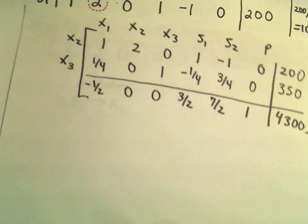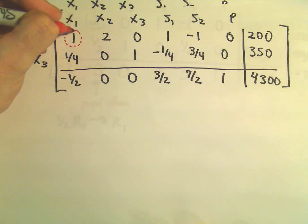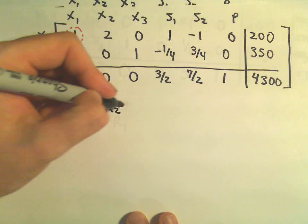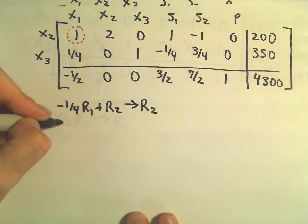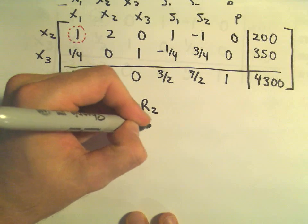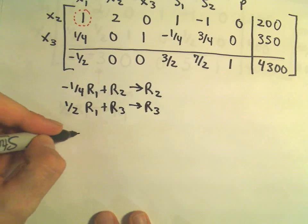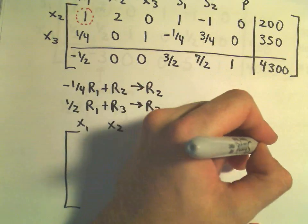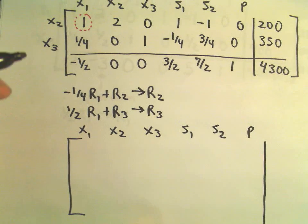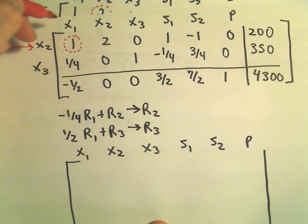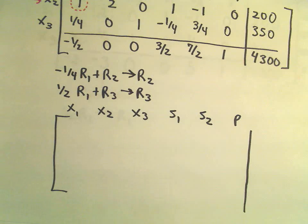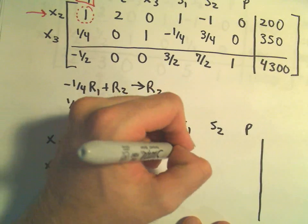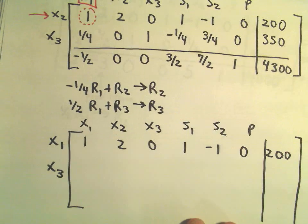Last but not least, we still have to get zeros elsewhere in that column. Our 1 is our pivot element. We're going to take negative one-fourth times row 1, add that to row 2 to get our new row 2. We'll also take positive one-half times row 1, add that to row 3 to get our new row 3. Since we're doing this row operation, we have to switch out our X sub 2 with X sub 1 — so instead of X2 and X3 on the left, we're now going to have X1 and X3 on the left.